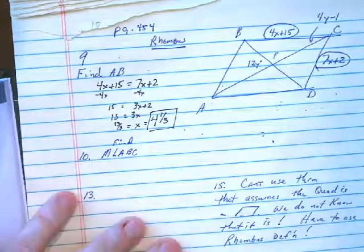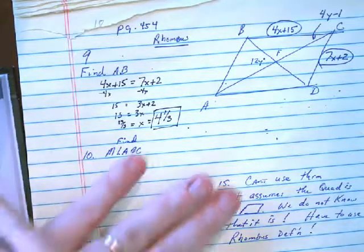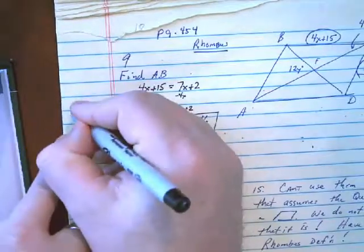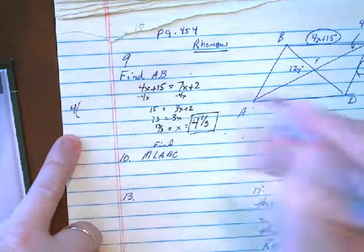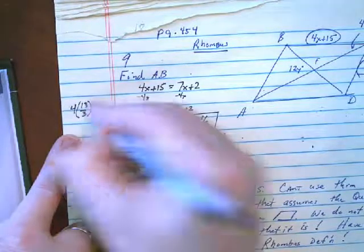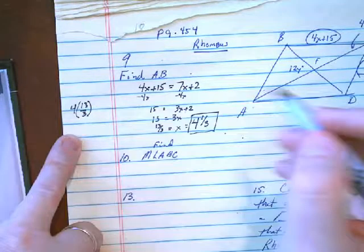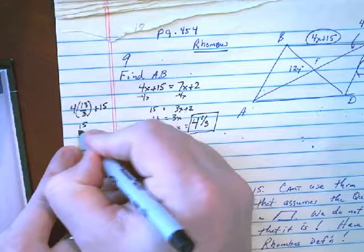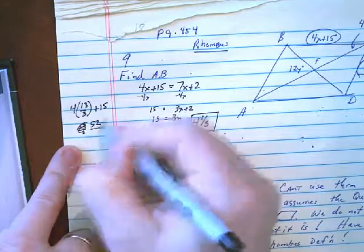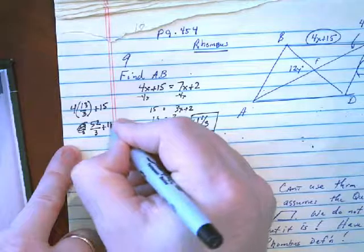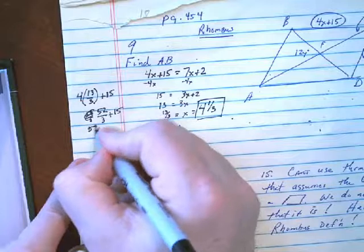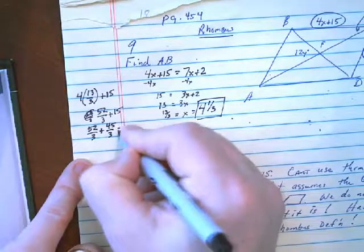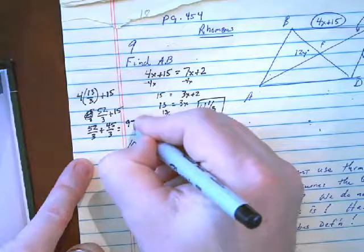So what's the length of AB? Well, we know that x is 4 and 1/3, so we got to put that in for x. I think I got room over here I can do that. Doesn't matter which one I put it into. Let's put it into this one over here. 4 times, we'll make that an improper fraction, 13 over 3 plus 15. So 4 times that, what is that, 52 thirds? 52, 4 times 13 plus 15. Need a common denominator. 15, 52 over 3, multiplied by 3, that's 45 over 3.